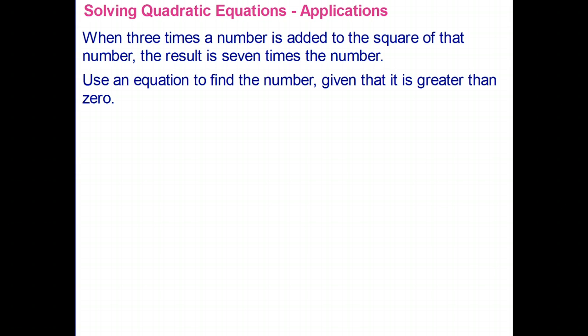Let's read the first question. When three times a number is added to the square of that number, the result is seven times the number. Use an equation to find the number given that it is greater than zero. This is a mathematical application where we take the words and turn them into an algebraic equation.